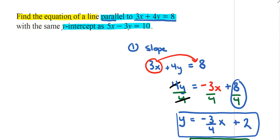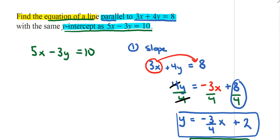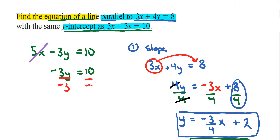The other piece of information is that the line we're looking for has the same y-intercept as 5x minus 3y equals 10. By definition, the x value for any y-intercept is always 0, so x goes to 0, leaving negative 3y equals 10. Dividing both sides by negative 3, the negative 3s cancel and we get y equals negative 10 over 3.